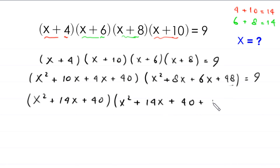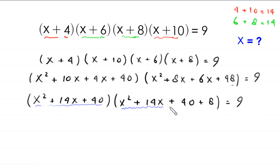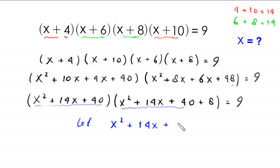Now we suppose that x²+14x+40 is equal to y. Let x²+14x+40 = y. Notice that x²+14x+48 equals (x²+14x+40)+8, which is y+8. So this equation will become y times (y+8) equal to 9.